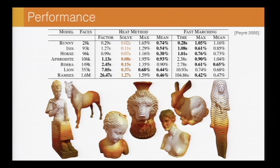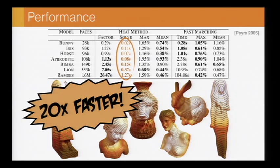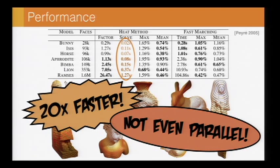So the overall cost of solving all of these problems is greatly reduced. So here's one example where we compare against the fast marching method of Kimmel and Sethian. And what you notice is that the accuracy is quite comparable in all these examples, but if you look at the amortized performance, the heat method's about 20 times faster on average. And I should point out that that's 20 times faster without doing any kind of parallelization at all. So we're just running this on a single core.